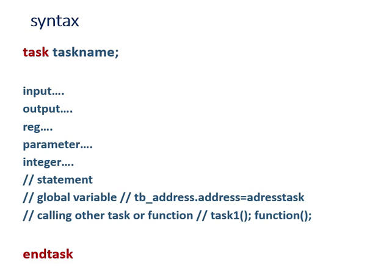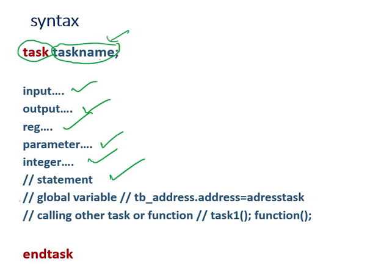The syntax for a task starts with the keyword 'task' followed by the user-defined task name. Inside, you can declare inputs, outputs, parameters, integers, and other variables. You can have any number of statements, access global variables, and call another task or function from within this task.